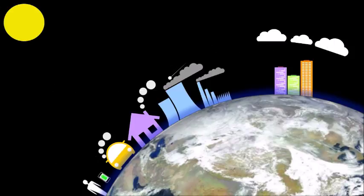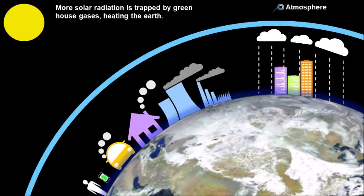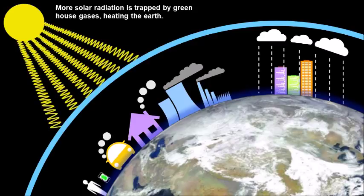Electricity is traditionally produced by burning fossil fuels, but the pollutants released to the atmosphere will cause acid rain, smog, and other environmental problems. Additionally, these pollutant gases will trap more solar radiation, causing global warming.